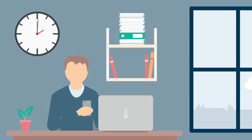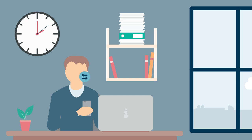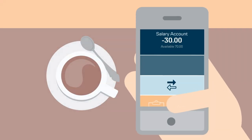It's important to know when you're spending your own money and when you're using your overdraft. Let's say you have an overdraft of £100 and you're currently using £30 of it. This is what you currently see when you log on to Mobile Bank.